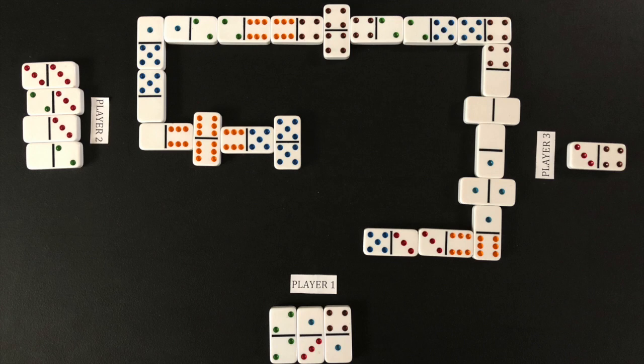Here player three wins with the lowest total of seven. Player three gets six points from player one, 13 minus seven, and player three gets nine points from player two, 16 minus seven.